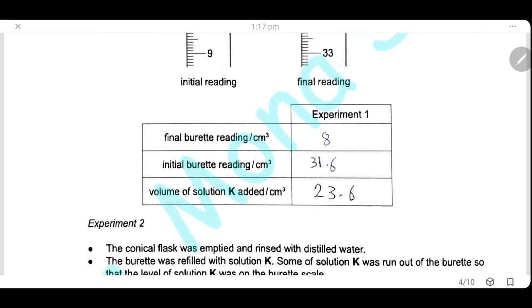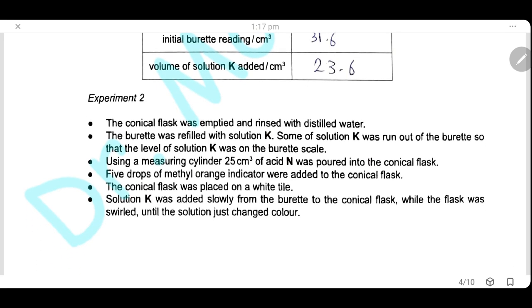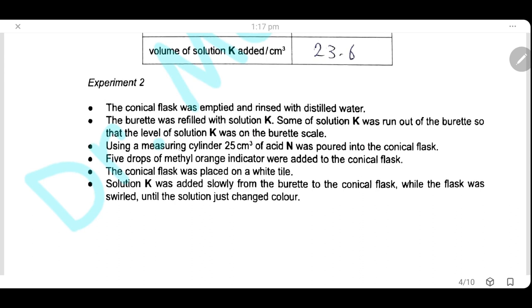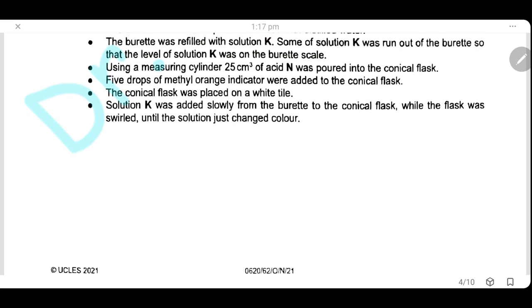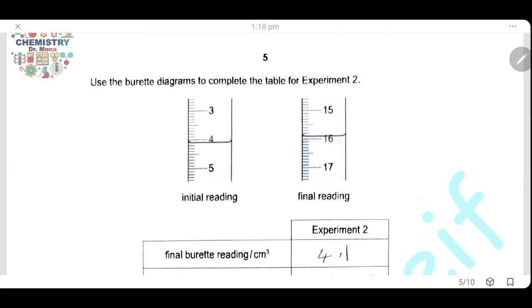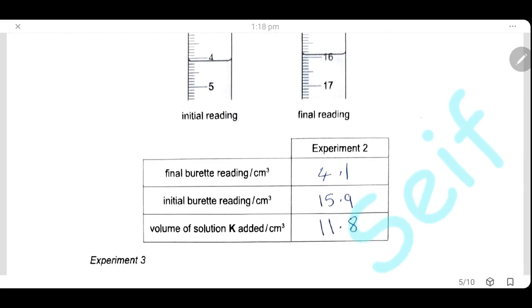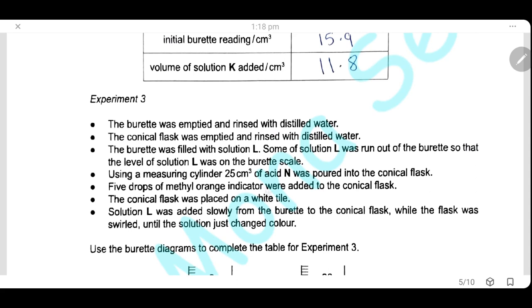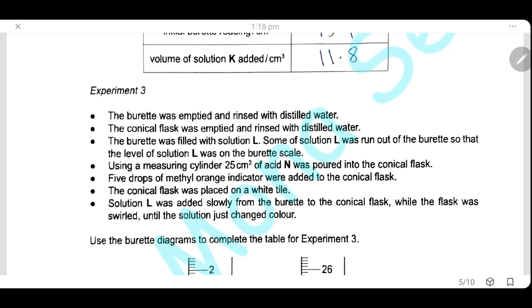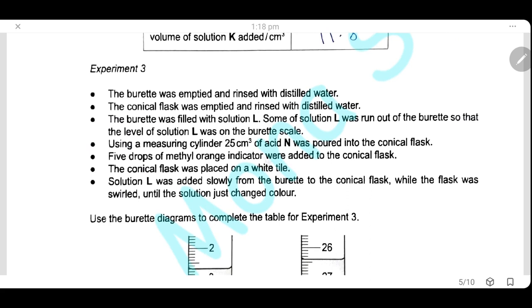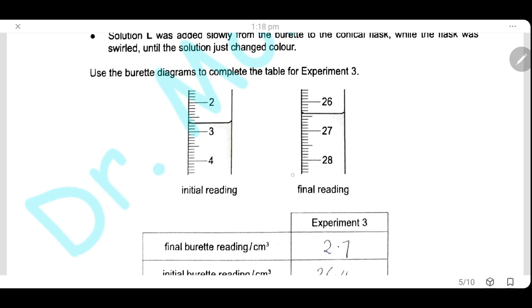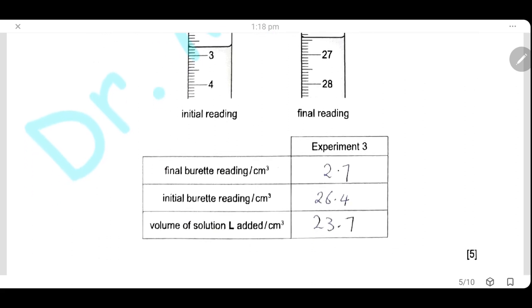So we can calculate the volume of solution K used, which is 23.6 milliliter. Experiment 2 done exactly as experiment 1, but we are using 25 cm³ of solution N, hydrochloric acid. Same indicator and same process. The final and the initial reading of solution K. Then we can calculate the volume of solution K, which is 11.8. In the third experiment, we are using sodium carbonate of solution L with 25 cm³ of the acid solution N. Again, we will find the initial and the final reading of solution L. So the volume of solution L will be measured as 23.7 milliliters.